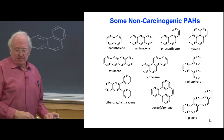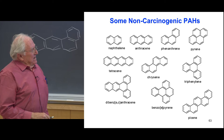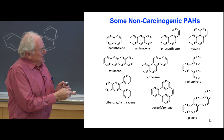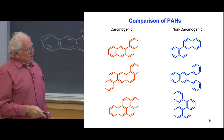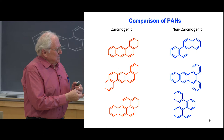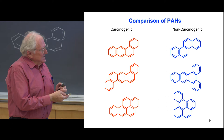These compounds don't cause cancer. The one exception has that arrangement, but the extra ring is here — that's the only exception. Compounds on the left are carcinogenic, the ones on the right are not. Here is benz pyrene — here's the extra ring, and this ring is unsubstituted. That is important, as you'll see in just a minute.